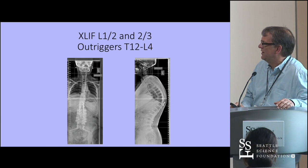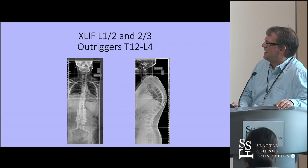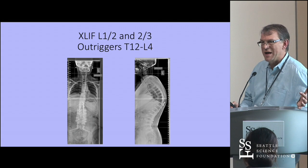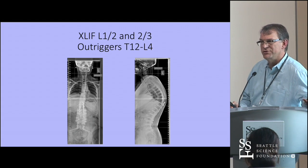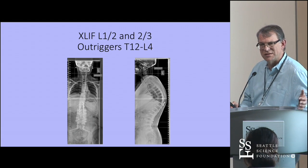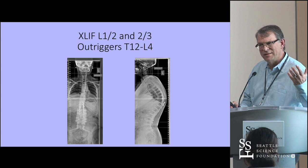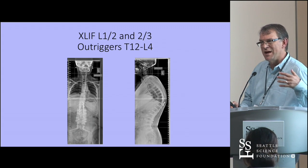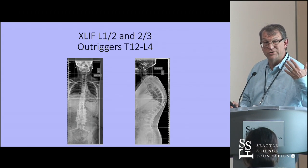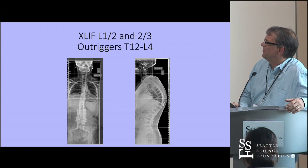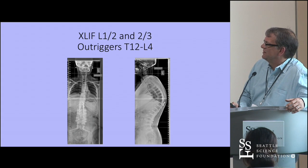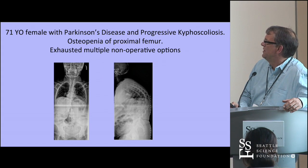An interesting observation is that recurrent symptoms after rod fracture often include not only back pain but also leg pain despite no radiographic evidence of stenosis. This may be a traction phenomenon — motion is restored around nerve roots that are adherent and tethered, potentially tugging on them. No decompressive work was done with the revision, yet leg pain was a prominent complaint.